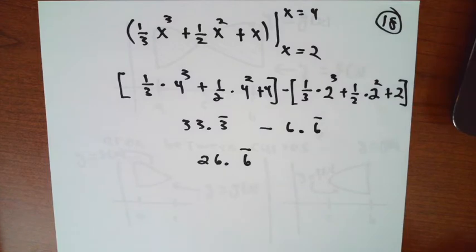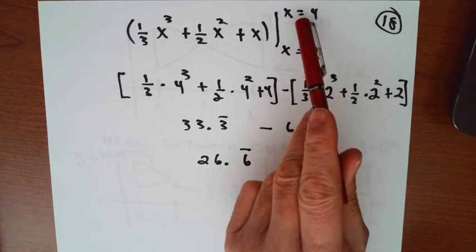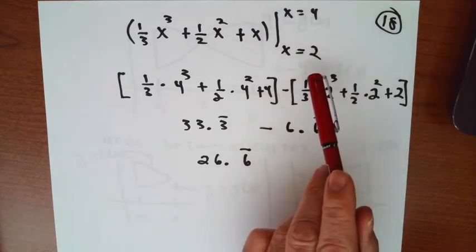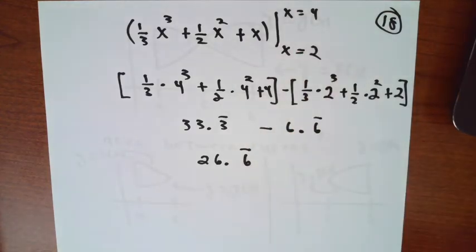Of course, that's a non-problem. An antiderivative is one-third x cubed plus one-half x squared plus x. You have to evaluate that at x equal 4, evaluate it at x equals 2, and then subtract. In the end, the answer turns out to be 26.6 repeating. That's the area between the two curves.